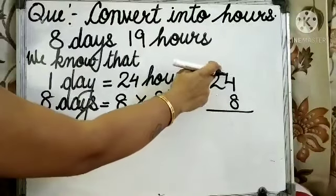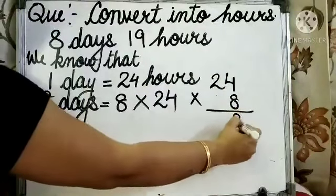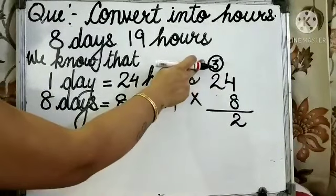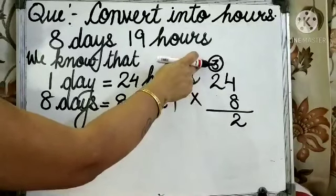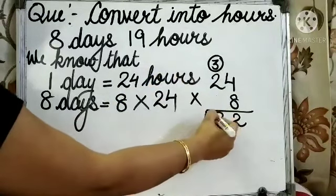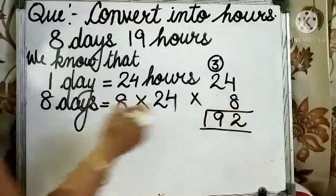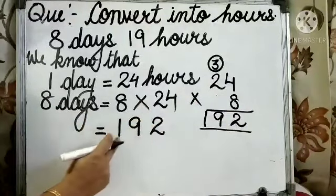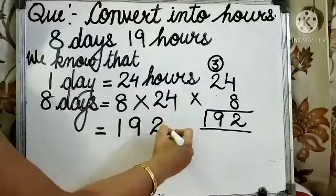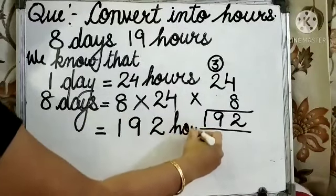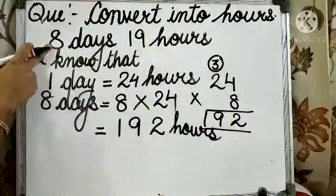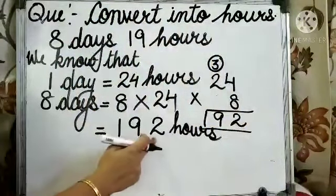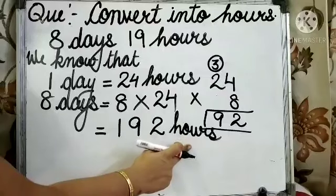8 4's are 32. 8 2's are 16. 16 plus 3 is equal to 19. So, here, our answer is 192 hours. We have converted 8 days into hours, and our answer is 192 hours.